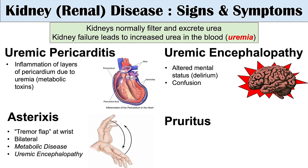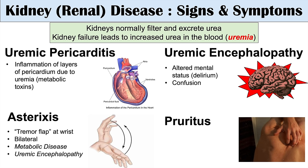Another symptom in kidney disease patients is pruritus — an itching sensation with very itchy, dry skin. This is again due to uremia, which causes patients to feel very itchy over most of their body, leading to excoriation or scratch marks. This is also known as uremic pruritus — itching caused by increased urea in the blood.